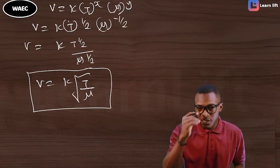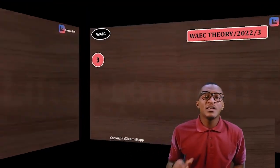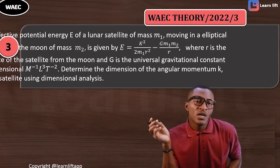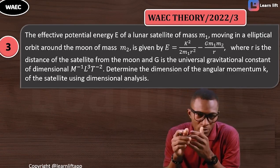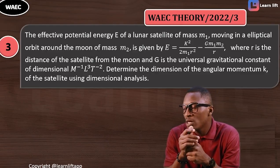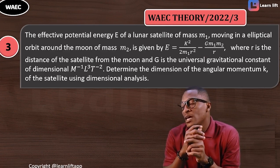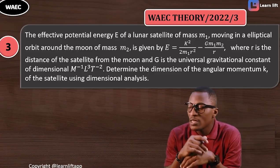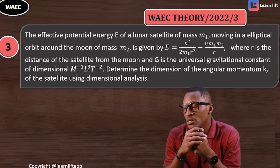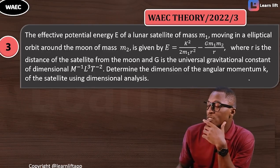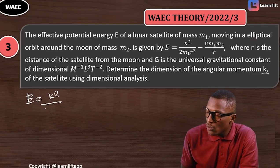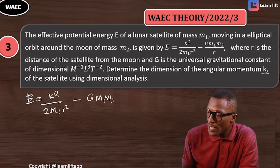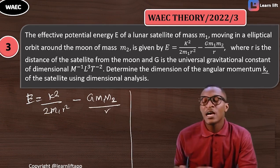Now let's see theory question 2022, Question 3. The question states: the effective potential of a lunar satellite of mass m₁ moving in a circular orbit around the moon of mass m₂ is given by E = k²/(2m₁r²) − Gm₁m₂/r, where r is the radius. The gravitational constant G is given as M⁻¹L³T⁻². Determine the dimension of the angular momentum k of the satellite.